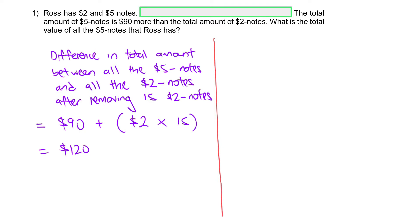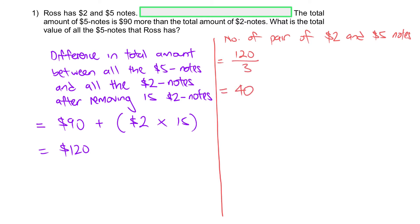Hence, the second step: number of pairs of $2 and $5 notes. How many pairs? We take $120 divided by $3 to give us 40 pairs. That means there are 40 $2 notes and 40 $5 notes. Why do we divide 120 by 3? Because for every pair the difference is $3, and we need to reach the $120 difference, so dividing gives us 40 pairs.